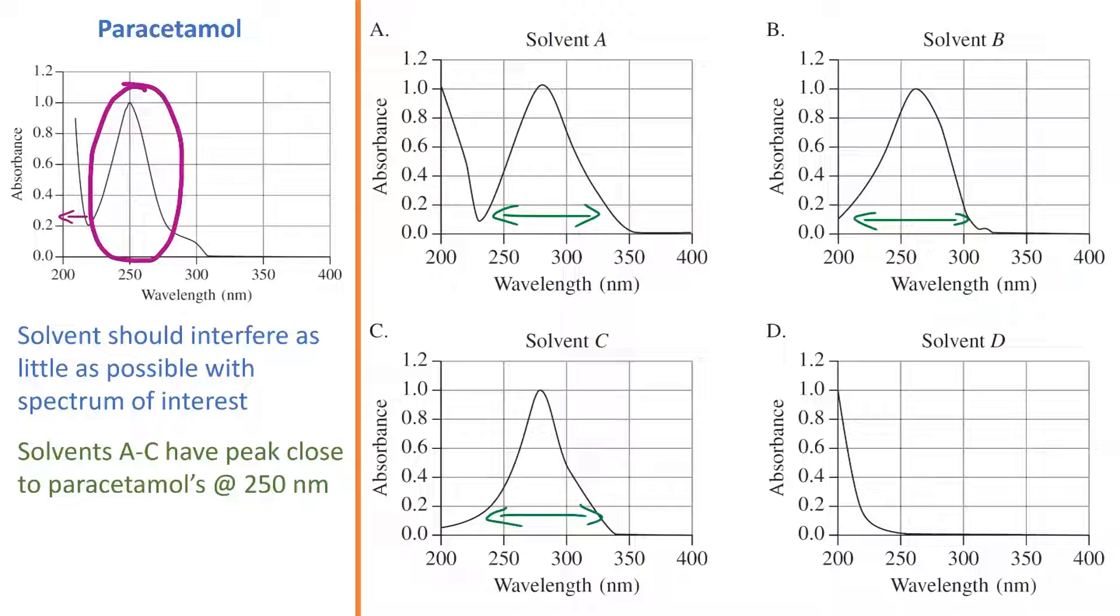If we did use any of these solvents, that would cause confusion over the presence or absence of paracetamol in a sample. If we see an absorption peak around 250 nanometers, this could be due to the paracetamol or the solvent itself.